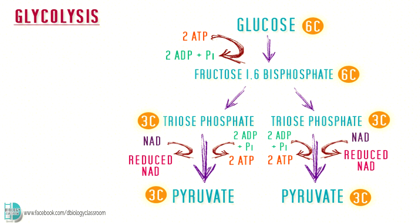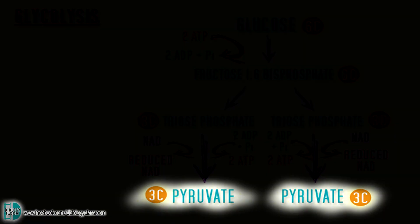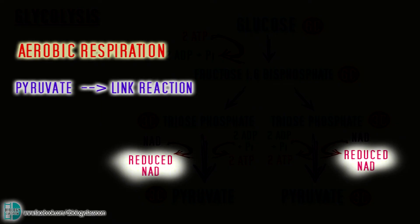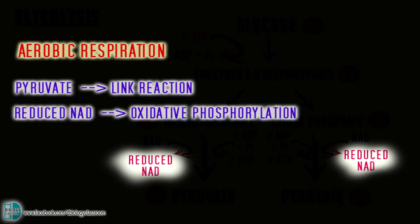When oxygen is available, pyruvate will go through the link reaction. Reduced NAD will move to the inner membrane of the mitochondrion and take part in oxidative phosphorylation.